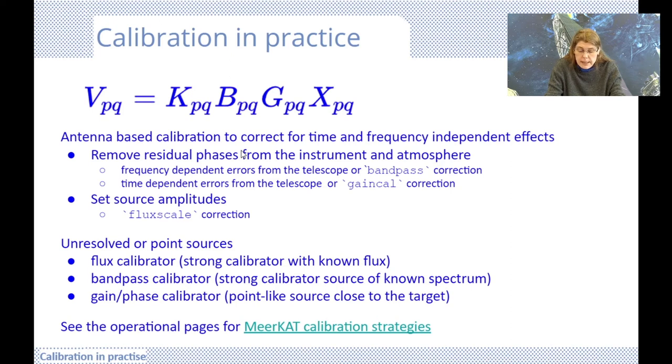Complex gain or phase calibration solutions to correct the atmosphere and instrumental effects require data from secondary calibrators. Although they are point-like sources, they must be close to the science target in order to estimate the local conditions. Generally, we choose them about 15 degree radius from the target. Luckily, there are many point-like radio sources scattered across the sky, and many are relatively well isolated from other confusing sources.